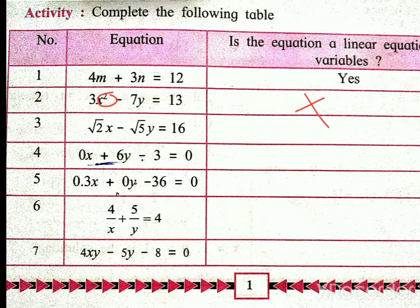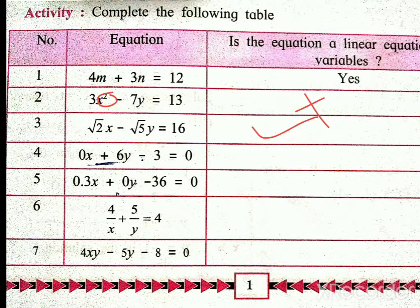You can identify the linear equations in two variables. The third equation: the variables x and y — two variables are there and their degree is also 1, so yes, it is a linear equation in two variables. Fourth equation: 0x plus 6y minus 3 is equal to 0.